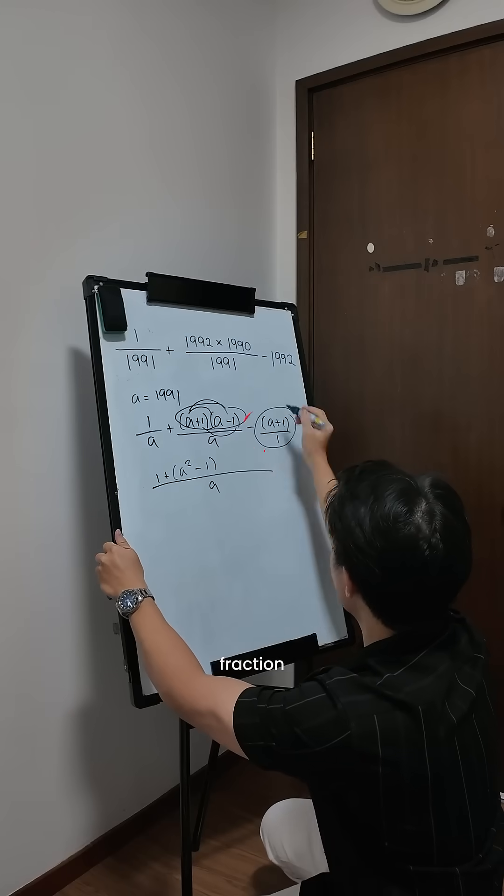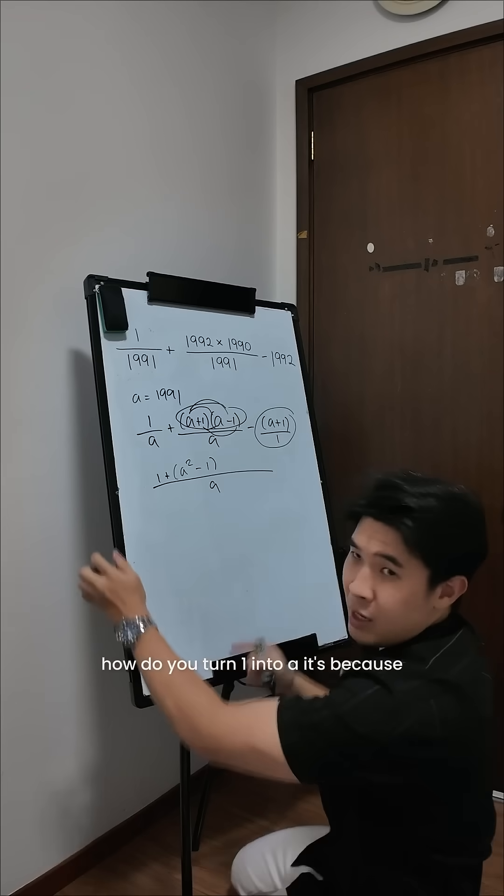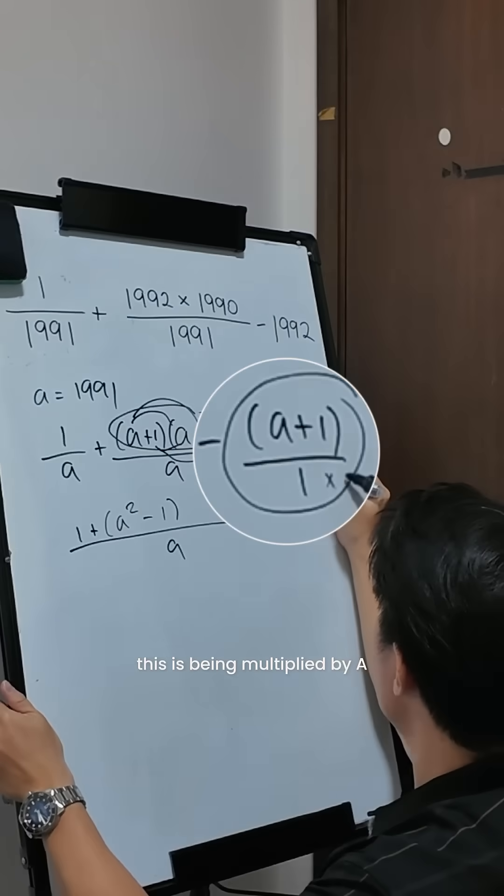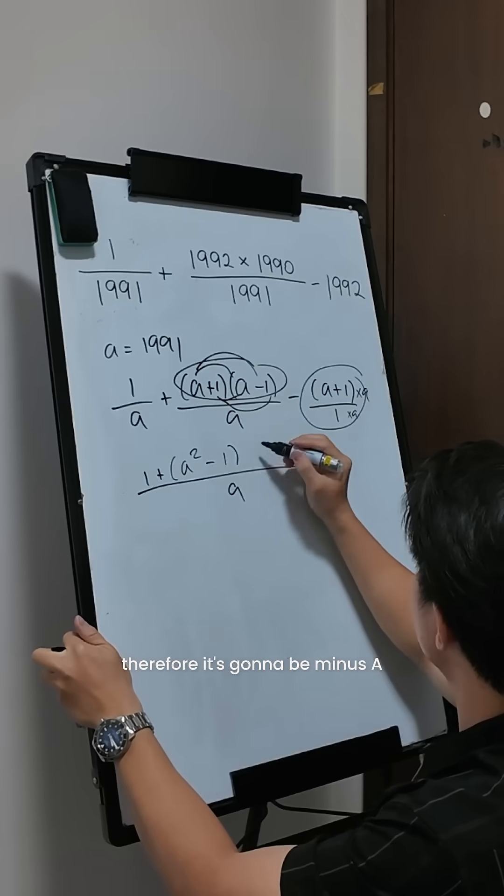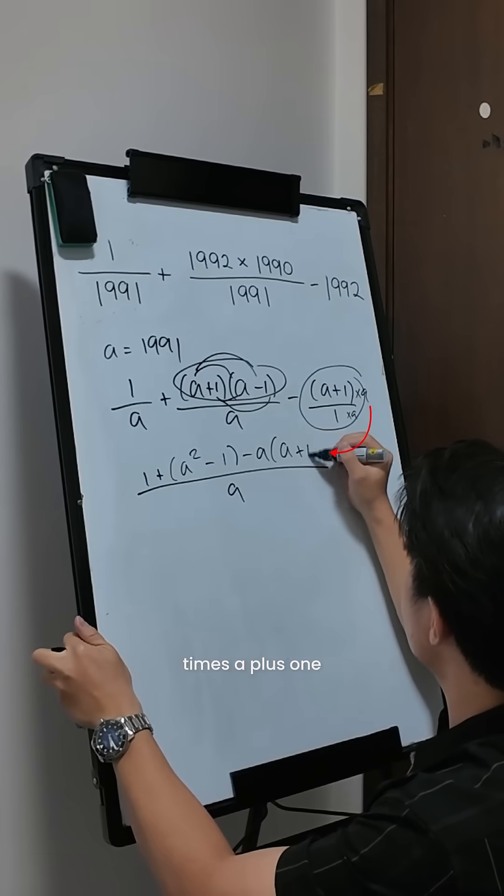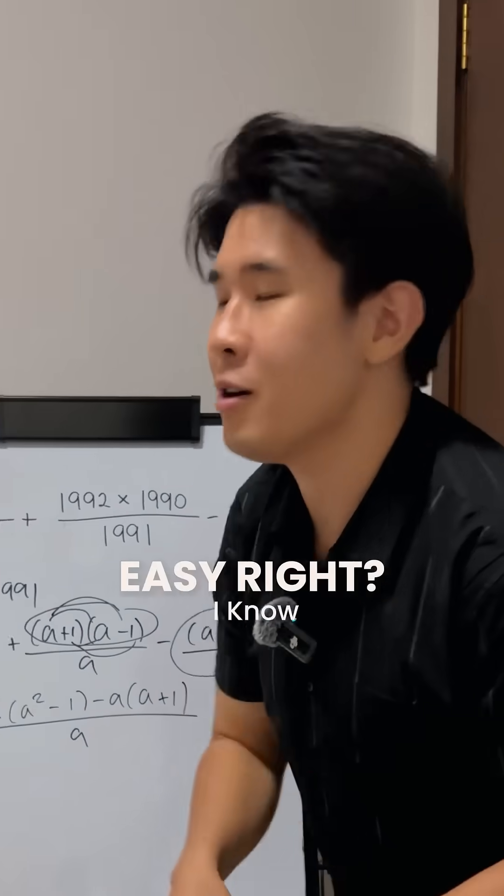Now, for this fraction, how do you turn 1 into a? It's because this being multiplied by a, so therefore, the numerator must also be multiplied by a. Therefore, it's gonna be minus a times a plus 1. Easy, right? I know.